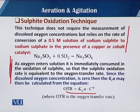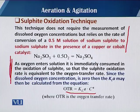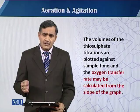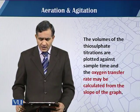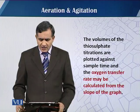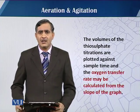In the fermentation process, at the start suppose there is zero oxygen; we remove all oxygen and relate that to a zero point, then we start. By this, the oxygen transfer rate is totally equal to KLA multiplied by the saturation point. In this method, the volume of thiosulfate titrations are plotted against the sample time, and the oxygen transfer rate may be calculated from the slope of the graph, giving us the OTR of that sample.